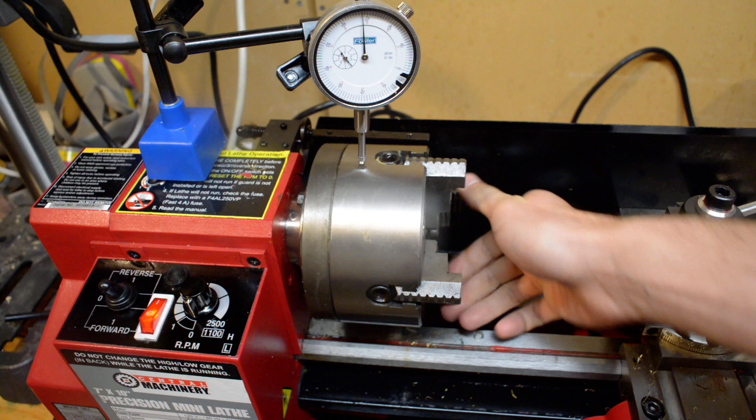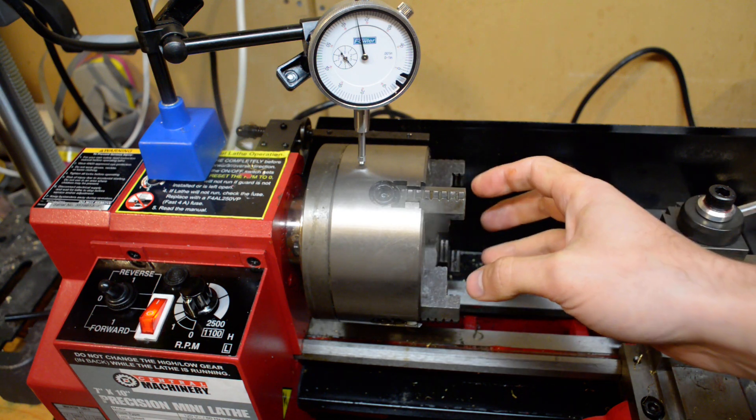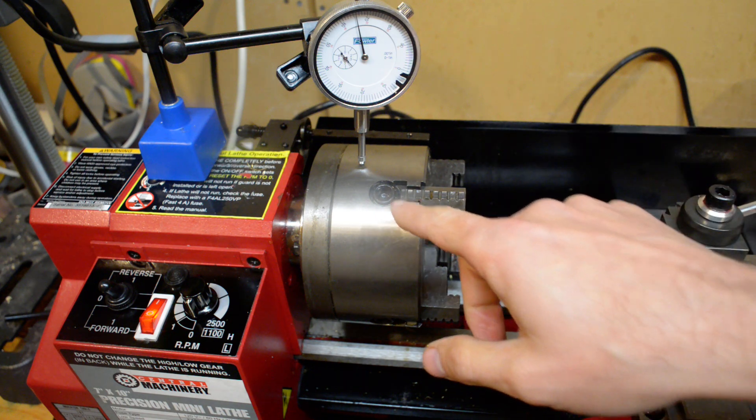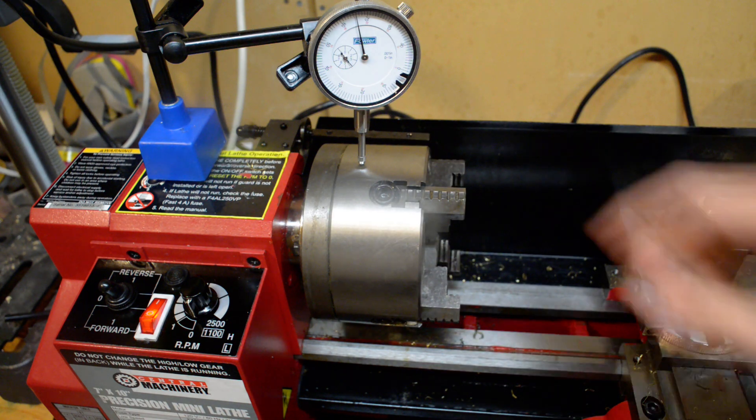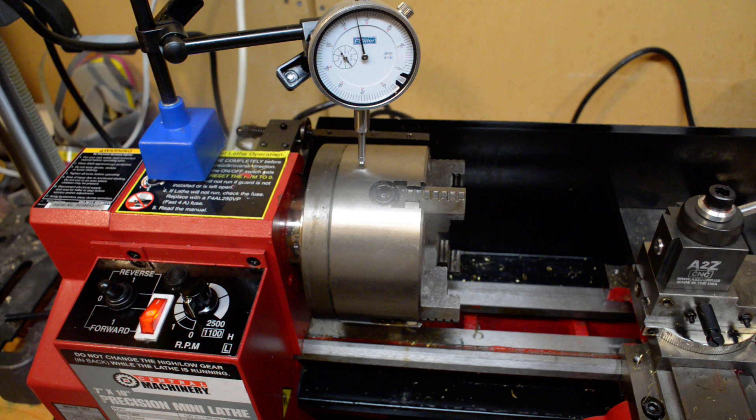So you've got the four jaws here that are each independently controlled. I could use that rather than bumping the piece, because sometimes when you bump it it will bump out. I can control each jaw independently so I can dial it right in to being super true to minimize the run out.